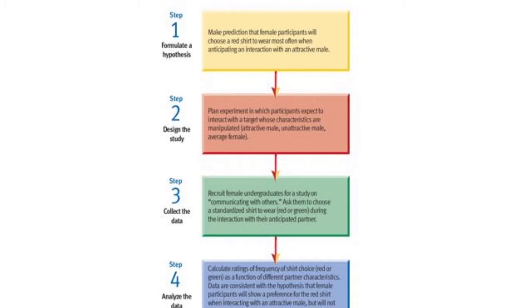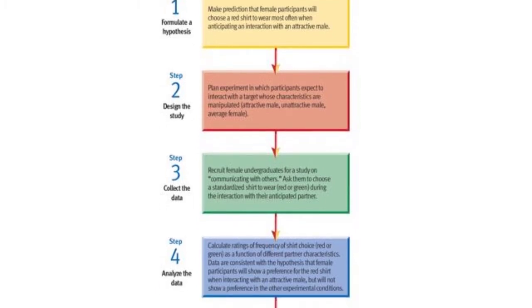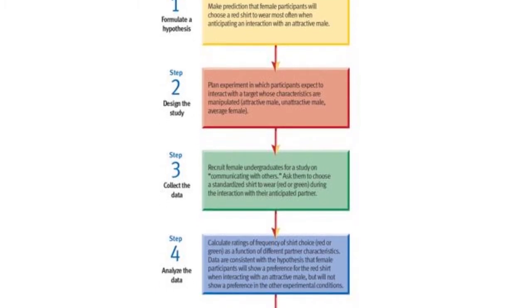Step two, in terms of the design of the study, the researchers planned an experiment in which participants expect to interact with a target whose characteristics are manipulated: attractive male, unattractive male, or average female.